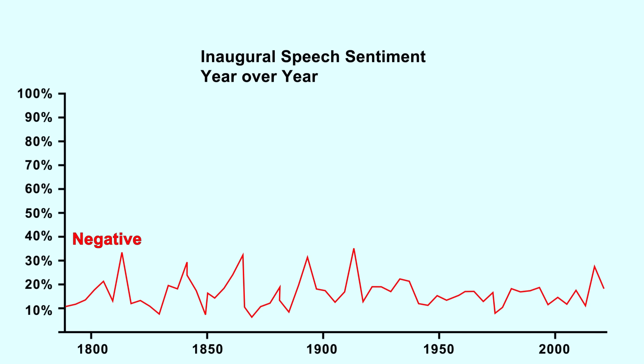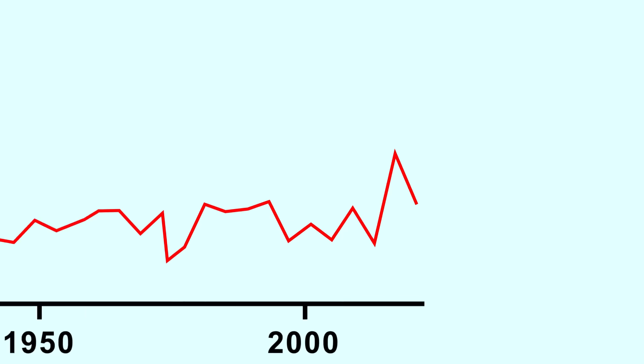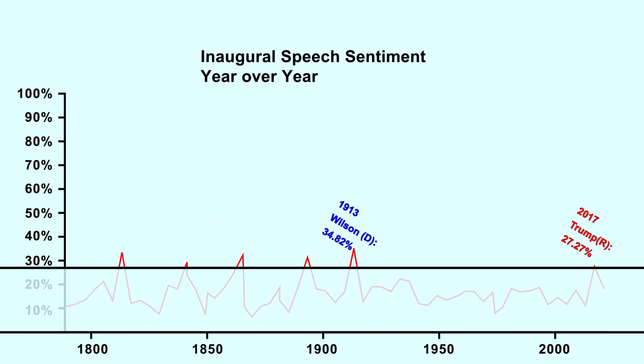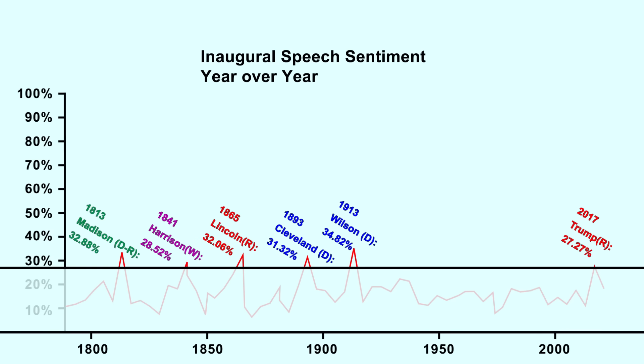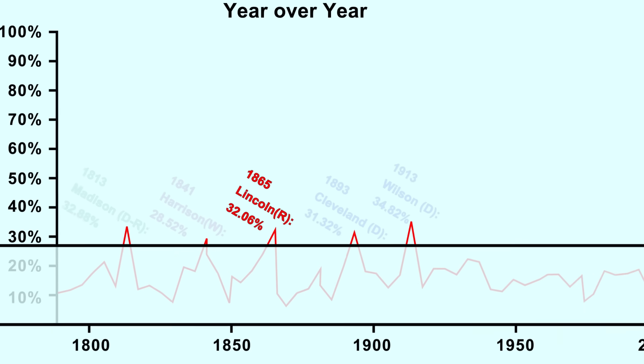What about the sentiment of Trump and Biden's speeches? That's where things get interesting. Trump had one of the most negative speeches, with a negativity score of about 27% — about 9% higher than Biden's 18% negativity score. We have to go back to 1913 to find a more negative speech than Trump's. Trump's speech is the second most negative speech that a Republican president has ever given; the most negative was Lincoln's re-election speech in 1865. I asked the AI to give me what it thought were some of the most negative excerpts from Trump's speech.